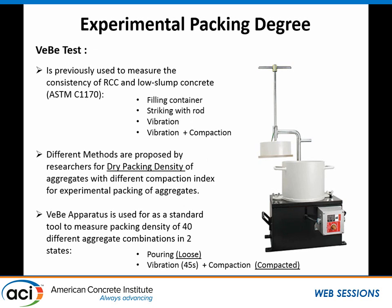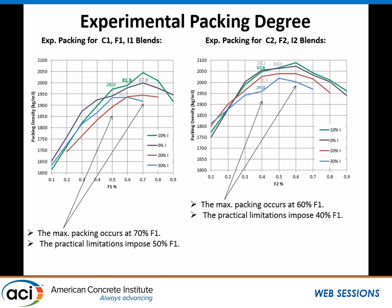For experimental packing, there are many different methods: rod compaction, vibration of different durations, vibration and compaction combined. Bob Dillard and others have talked about packing index and how it affects virtual packing. In the lab, we used a VB machine — used for finding consistency of RCC pavements — to compare loose packing before compaction versus compacted packing. The method involves pouring at any combination, called loose packing, and then vibrating for 45 seconds with compaction, which we found to be the most consistent time to pack the aggregate.